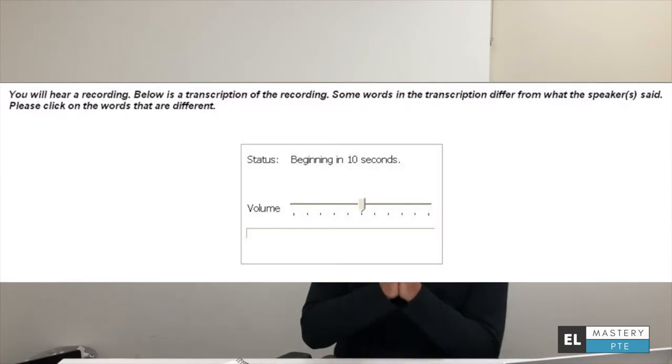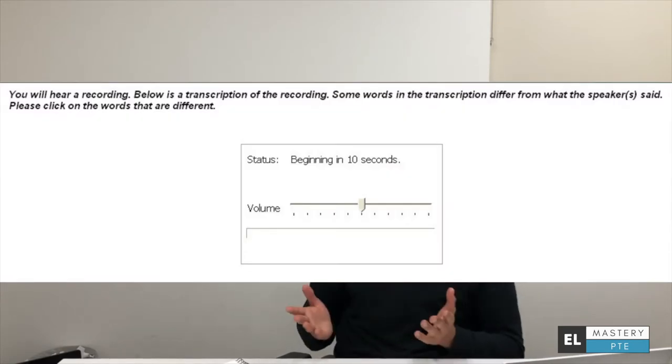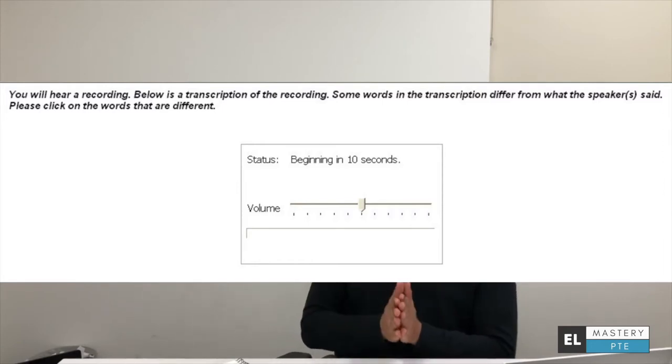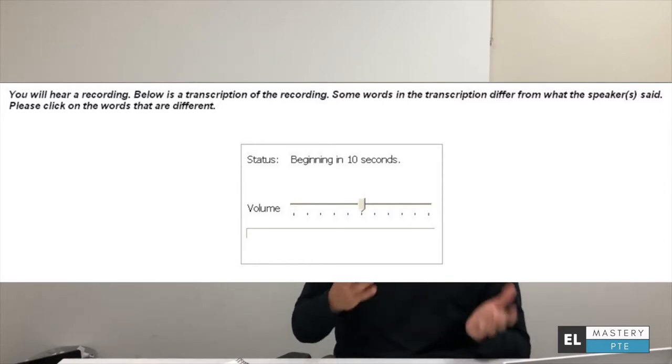In this exercise, you will listen to a recording being played in the background while also reading a paragraph on screen. Some words from the recording will differ from the words in the paragraph, and all you need to do is click on the word that is incorrect. Before I give you tips, we'll do one example together and I'll give you enough time to find the answers. After that I'll give you advice on how to get maximum marks and minimum mistakes, and then we'll do another example.